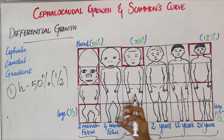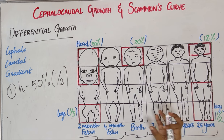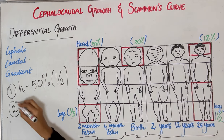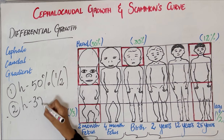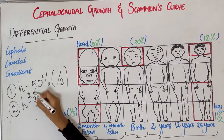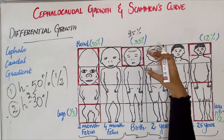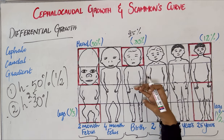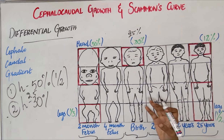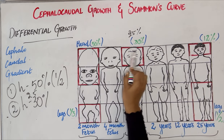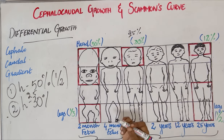As the fetus grows, the proportion of the head size will gradually reduce and the limbs will start to grow. As it reaches birth, we can see the head size will be almost about 25 to 30% — about one-fourth of the size will be occupied by the head. The limbs have started to develop, and the growth of the limbs will be faster, so the percentage of the head has gradually reduced from 50% to about 30%.